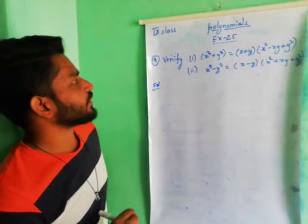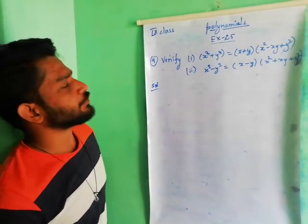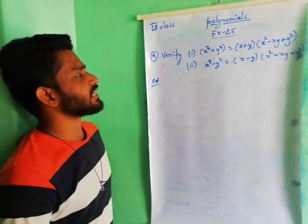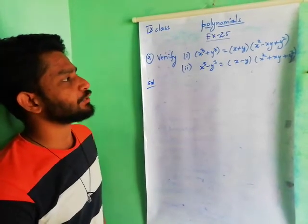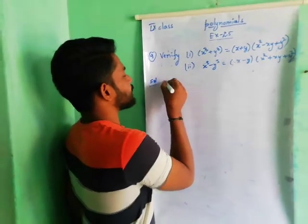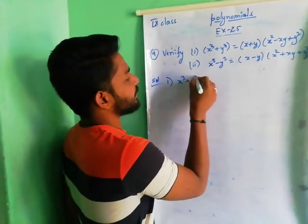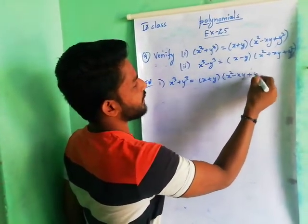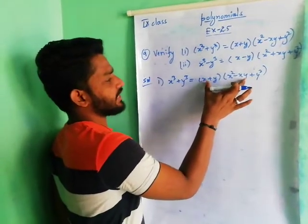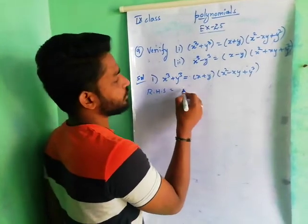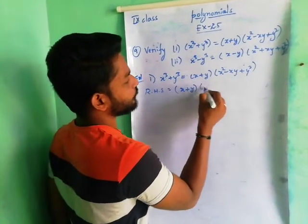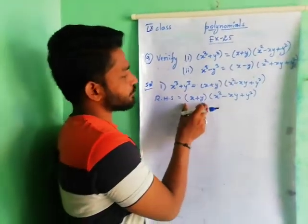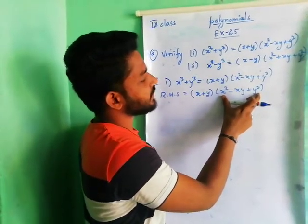Coming to the 9th question: verify that x cube plus y cube is equal to (x + y) into (x square minus xy plus y square), and the second one: x cube minus y cube is equal to (x − y) into (x square plus xy plus y square). Consider the first one. We are considering the RHS side. RHS is equal to (x + y) into (x square minus xy plus y square).